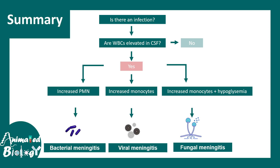What about fungal meningitis? In fungal meningitis there is an increase in monocytes and hypoglycemia — a significant reduction in glucose. It must be understood that low glucose is common to both bacterial and fungal meningitis, but the elevated cell type in fungal meningitis is monocytes, not neutrophils. This is how a clinician can get a broad idea of what type of infection has occurred in meningitis, helping them treat the condition more efficiently.